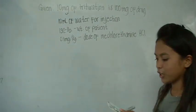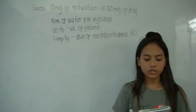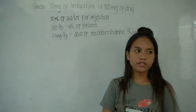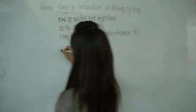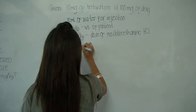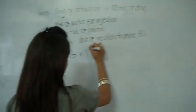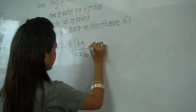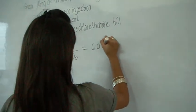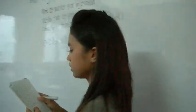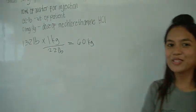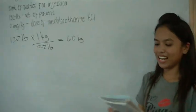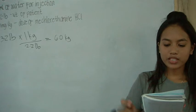To compute for the volume of injection, we must first convert the pounds into kilograms. 132 pounds times 1 kilogram over 2.2 pounds. The answer is 60 kg. There are 2.2 pounds in 1 kilogram. We will proceed to the step